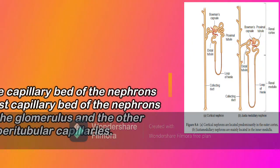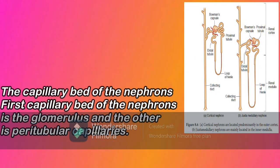The capillary bed of the nephrons. The first capillary bed of the nephron is the glomerulus, and the other is the peritubular capillaries. The glomerular capillary bed is different from other capillary beds in that it is supplied by the afferent and drained by the efferent arteriole. The efferent arteriole that comes out of the glomerulus forms a fine capillary network around the renal tubule called the peritubular capillaries.